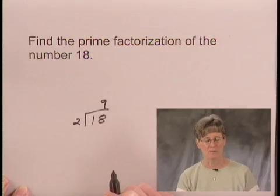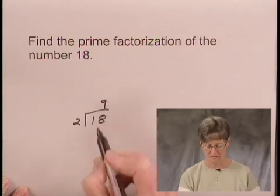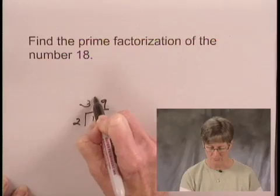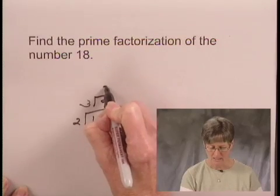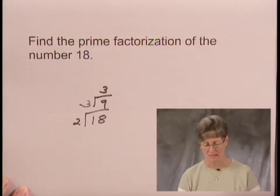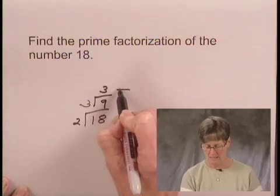9 is divisible by 3, so we'll take 3 into 9 and we get the number 3 for a quotient. And we see that the number 3 is a prime number.